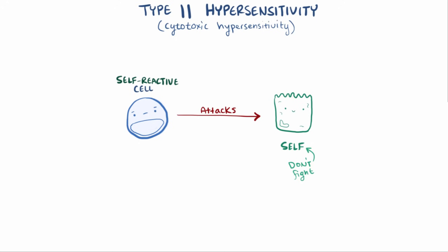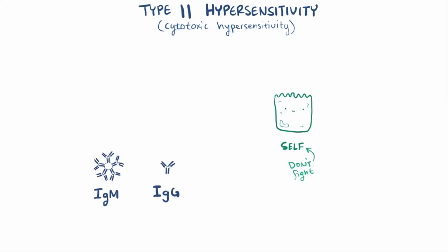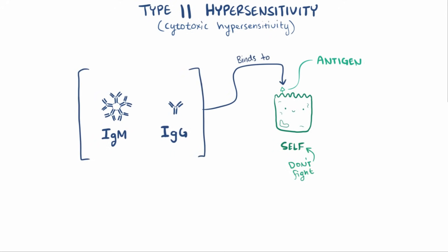In type 2 hypersensitivity, escaped self-reactive B cells become activated and produce IgM, or with the help of CD4-positive T helper cells, IgG antibodies that attach to antigens on host cells. There are two types of antigens involved: intrinsic, meaning an antigen the host cell normally makes, or extrinsic, which is an antigen from an infection or even some medications like penicillin that gets attached to the host cell.